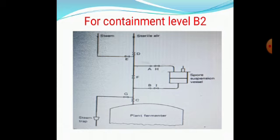Here, H and I are detachable points. In the previous example, detaching the union could cause contamination if not attached properly. In this B2 setup, that detachment is not needed because it is a separate loop. D, F, C are continuously connected, and A and B are on the outer ring — when you close A and B, contamination may not happen. There is no need for a union or plug A and B here, so contamination can be avoided. That is the reason for this type of setup — it is aseptic inoculation for containment level B2.